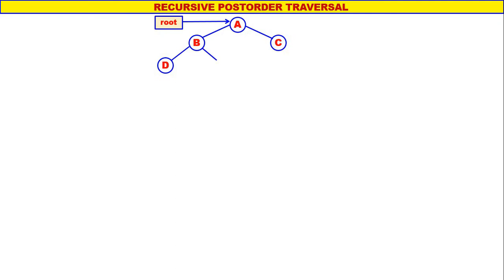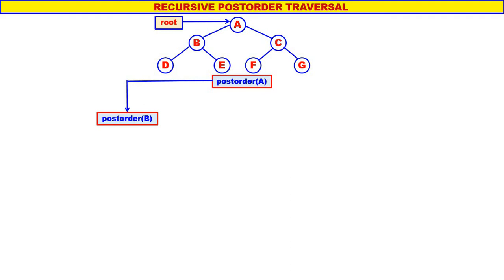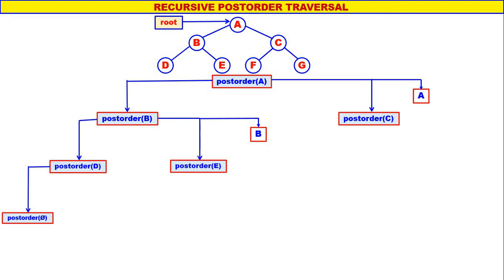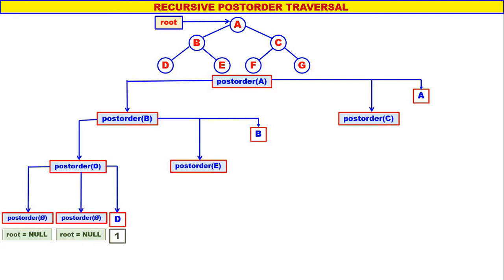Let us consider a slightly bigger tree. A is the root node, so we call post_order(A). Left child of A is B, therefore post_order(B). Right child of A is C, therefore post_order(C), then display A. Now in post_order(B), left child of B is D, therefore post_order(D). Right child of B is E, therefore post_order(E), then display B. In post_order(D), left child of D is null and right child of D is null, so we call post_order(null) twice, then display D. D is the first one to be displayed.